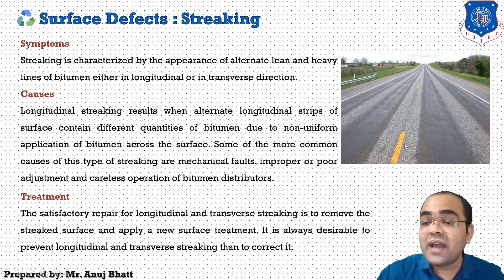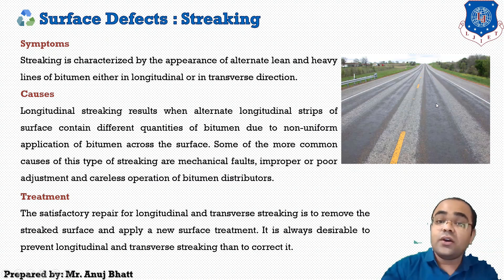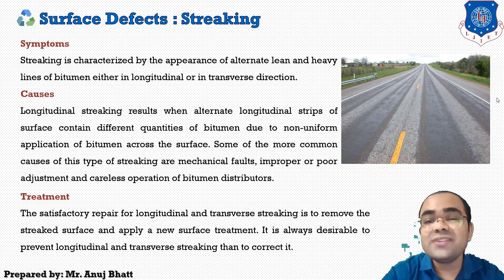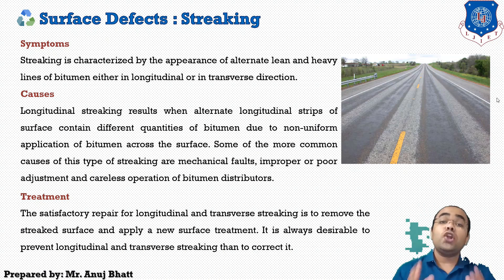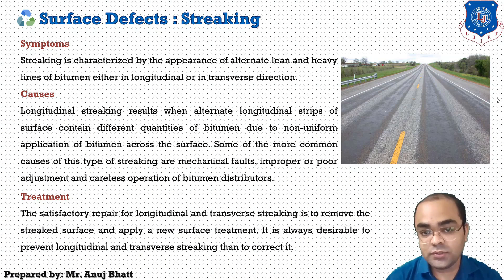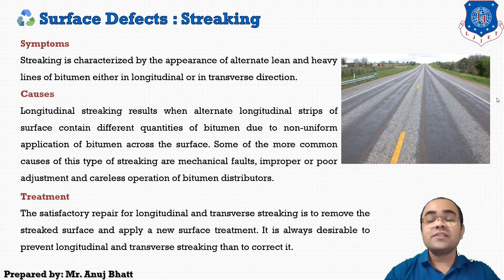The existing pavement has a grayish color, while here you can see different or alternate lean or heavy lines of bitumen appearing on the surface. Longitudinal streaking results when alternate longitudinal strips of the surface contain different quantities of bitumen due to non-uniform application of bitumen across the surface.